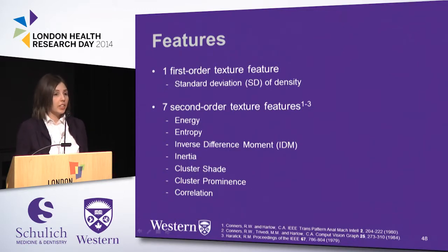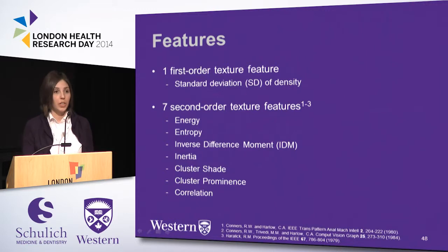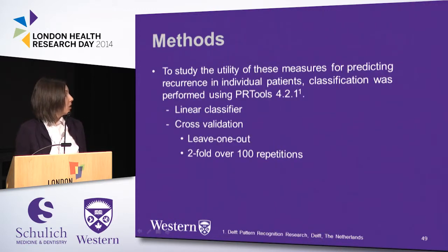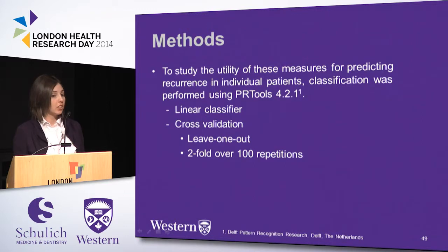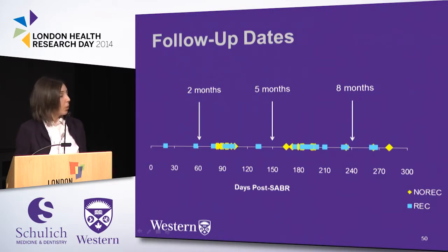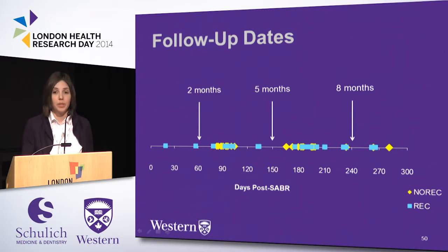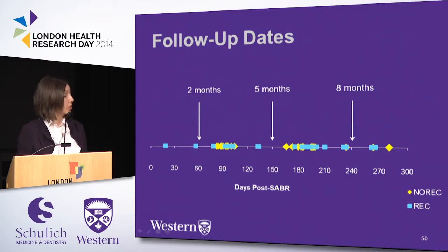We calculated seven second-order features based on the Haralick, Harlow, and Trivedi texture feature set, which is well-established in the literature. To study the utility of these measures for predicting recurrence, we used classification with a linear classifier, as well as leave-one-out and two-fold cross-validation. We analyzed our scans within two discrete time points — from two to five months and five to eight months — corresponding to the approximately three- and six-month clinically scheduled follow-up scans.